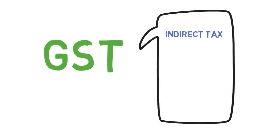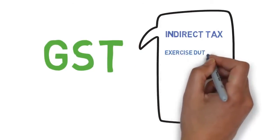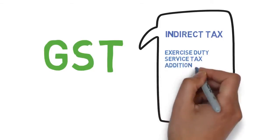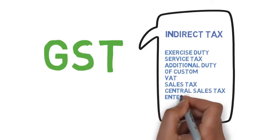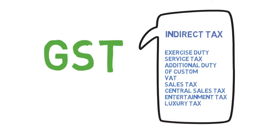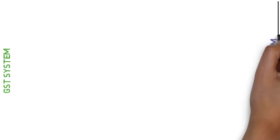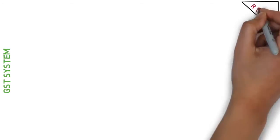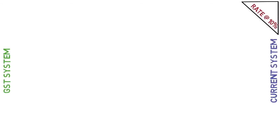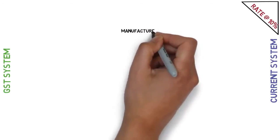The point of interest here is indirect taxes, because GST will replace all indirect taxes, which includes excise duty, service tax, additional duty of customs, sales tax, central sales tax, entertainment tax, luxury tax, etc. The question is: how is GST different from the current taxation system in India? I'll explain this with a simple example, considering a simplified tax rate of 10 percent at each level.